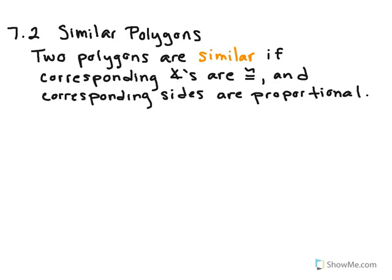So the first definition that we have is similar. And when we're talking about polygons, two polygons are similar if corresponding angles are congruent and corresponding sides are proportional. Well, that's a lot of big vocabulary words, so let's try a picture and see if we can make some more sense out of this.